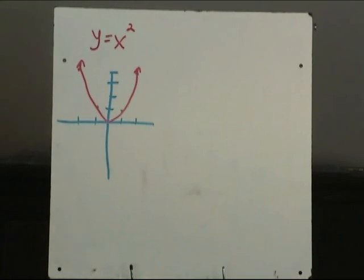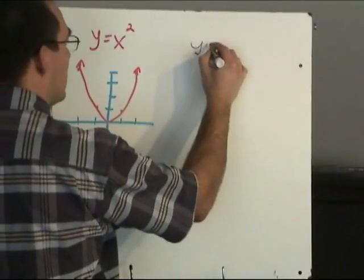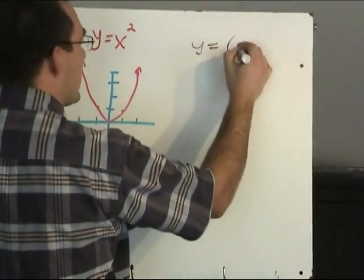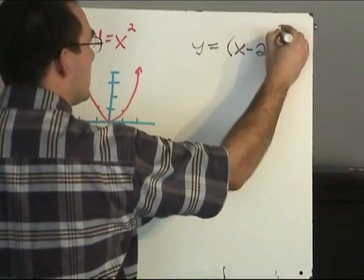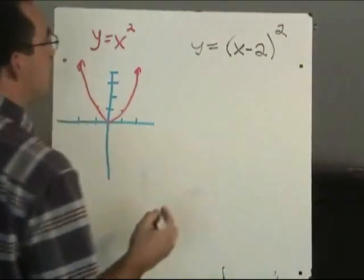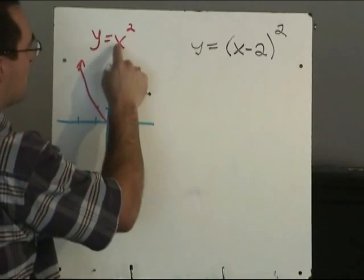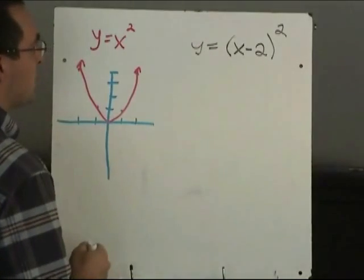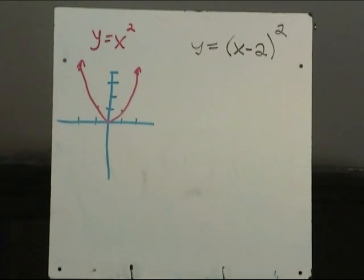So let's consider what would happen if we took the parabola y equals x squared and replaced the x value with x minus 2. If we took the function y equals x squared and replaced x with x minus 2, so y equals x minus 2 squared, and entered that in a graphing calculator, let's see what we would get.